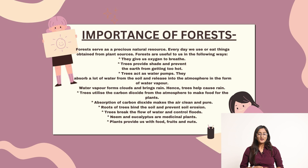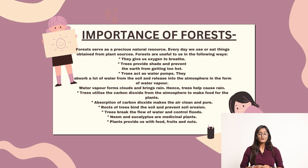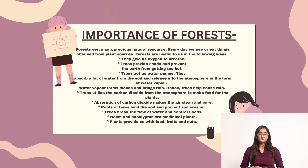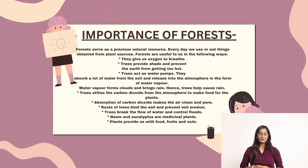Trees utilise the carbon dioxide from the atmosphere to make food for the plants. Absorption of carbon dioxide makes the air clean and pure. Roots of trees bind the soil and prevent soil erosion. Trees break the flow of water and control floods.